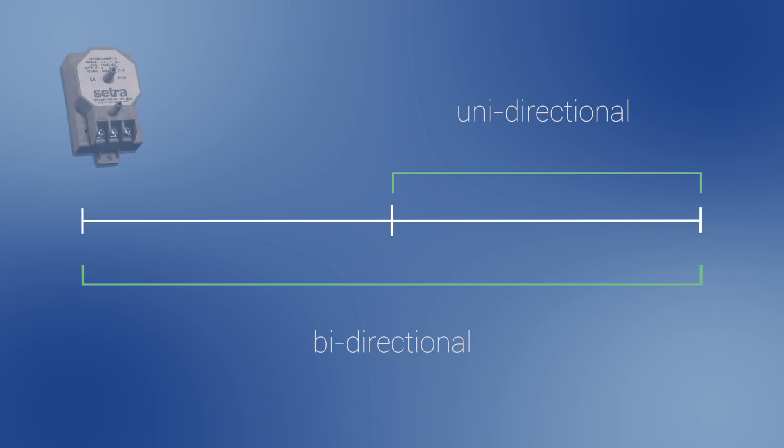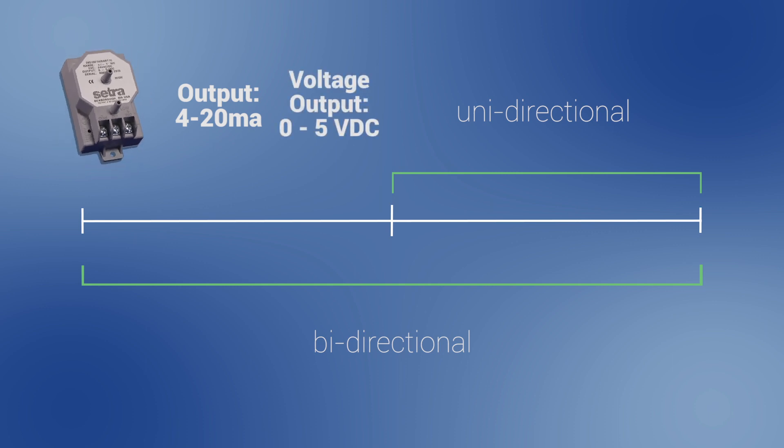The output of our low differential pressure transducers is typically 4 to 20 milliamps or a voltage output such as 0 to 5 VDC or 0 to 10 VDC.